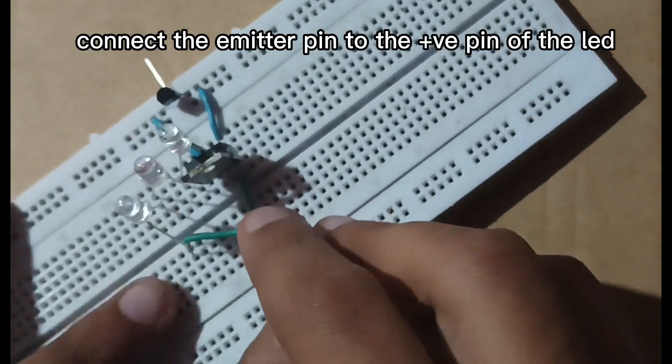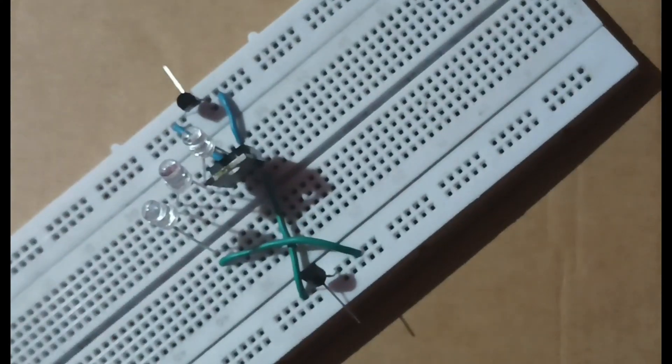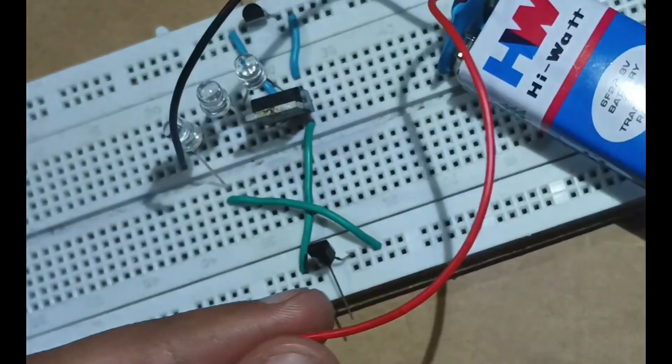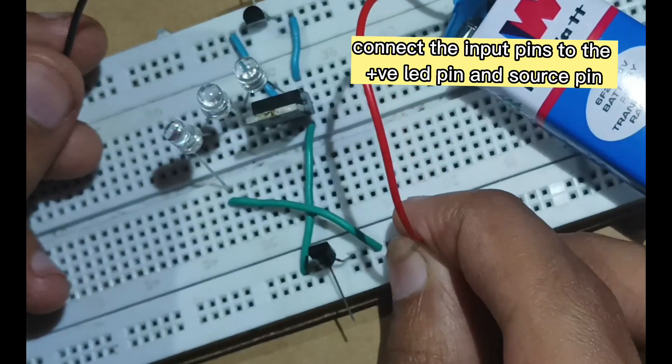Connect the emitter pin to the plus V pin of the LED. Connect the input pins to the plus V LED pin and source pin.